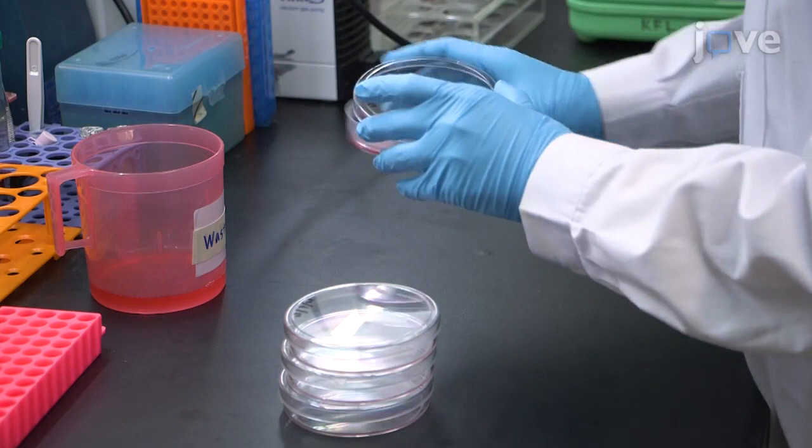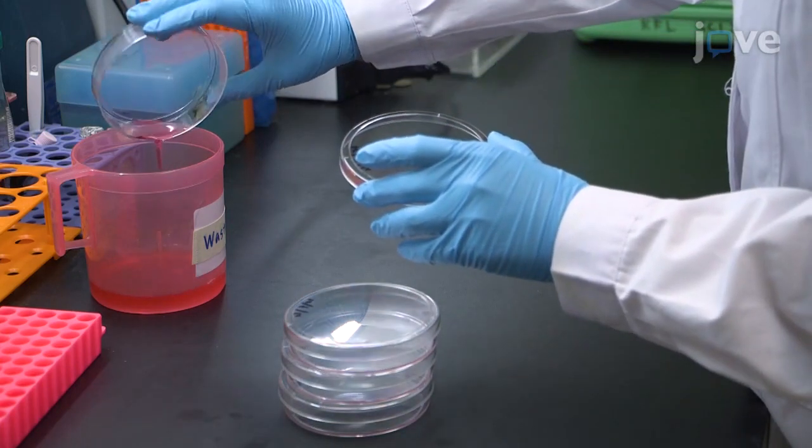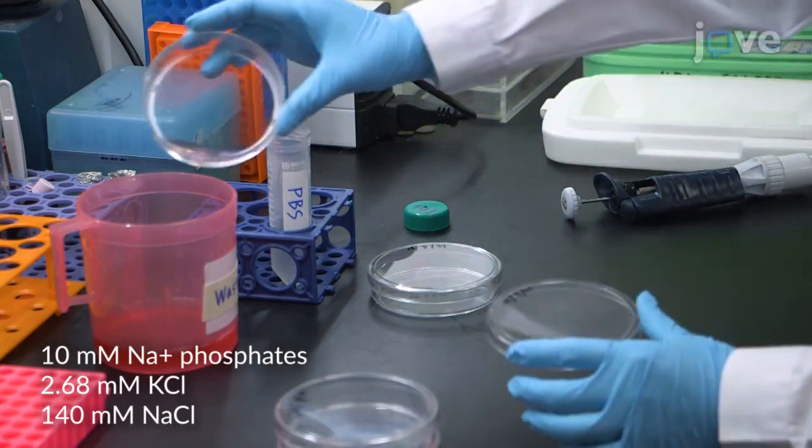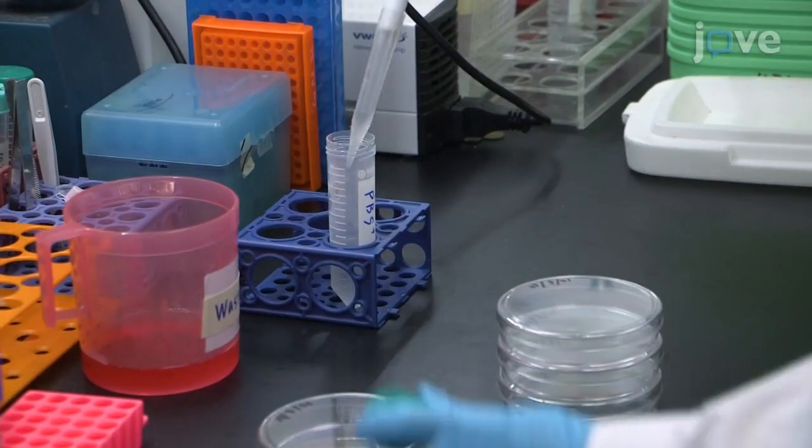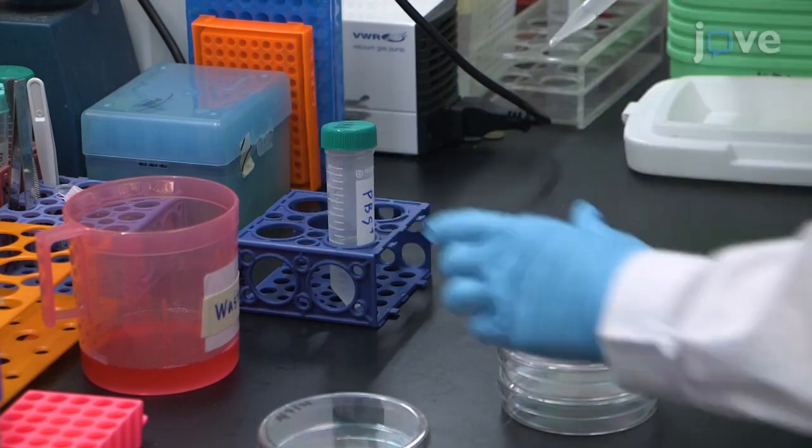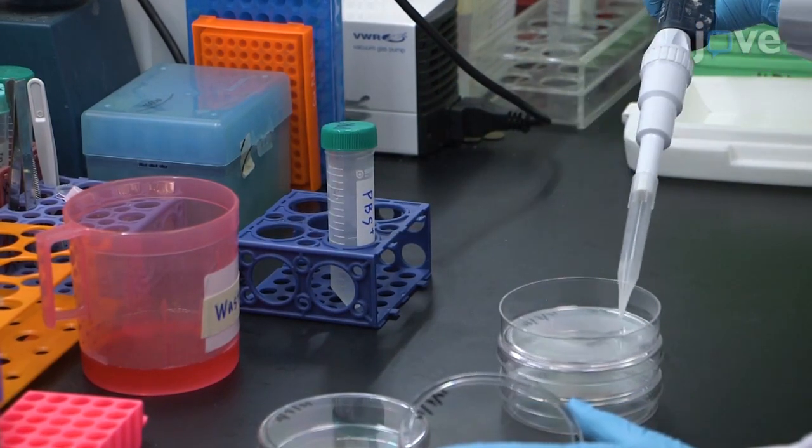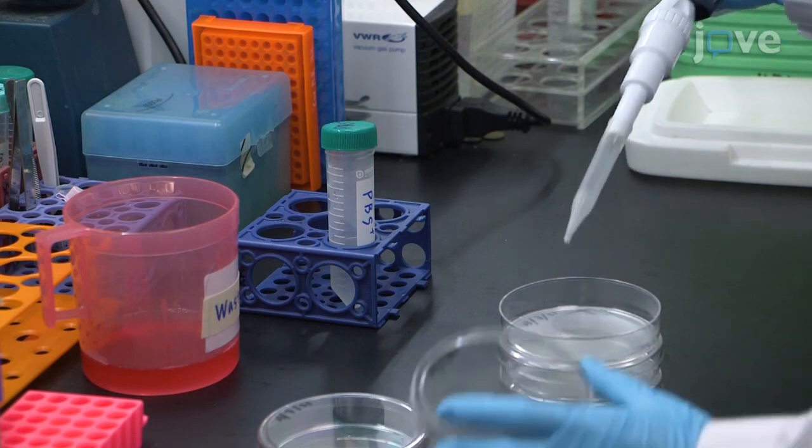To harvest the cells, discard the culture medium 48 hours post-transfection and wash the cells twice with ice-cold PBS. Then, add 1 mL of ice-cold PBS supplemented with 0.5x protease inhibitor cocktail and 0.5x phosphatase inhibitor cocktail to each dish.